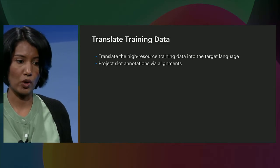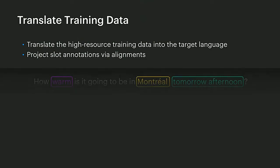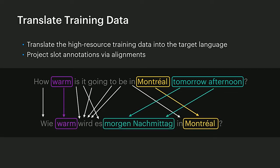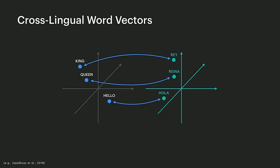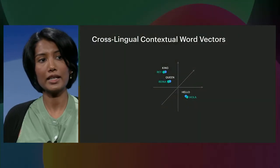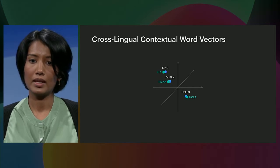My colleague just talked about machine translation models, which are easier to train because they only need parallel data. Here we consider how we can use such machine translation models and all the enhancements we are doing to them to improve the intent slot filling models. We explore three types of knowledge transfer techniques from languages where we have training data to other languages. The first is to automatically translate training data in a high-resource language — by high-resource, I mean languages in which we have large amounts of training data, for example English. The second is cross-lingual word vectors, and the third is cross-lingual contextual word vectors.